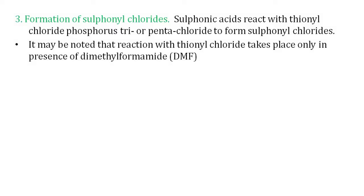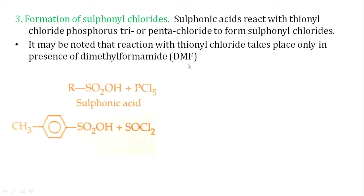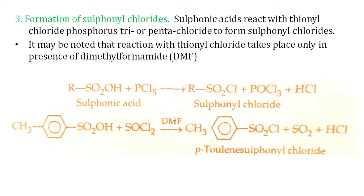Now let's see the reactions. Sulfonic acid reacts with thionyl chloride or phosphorus tri- or pentachloride to form sulfonyl chloride. When using thionyl chloride, DMF (dimethylformamide) is used as a catalyst to facilitate the reaction. In this reaction, the OH group is simply replaced by Cl, and the other byproducts are separated. The result is sulfonyl chloride.